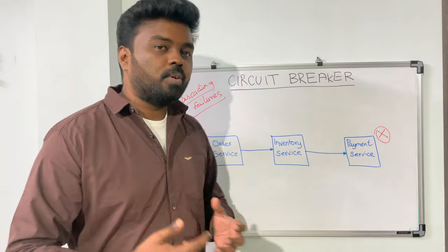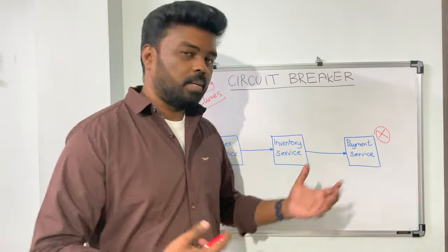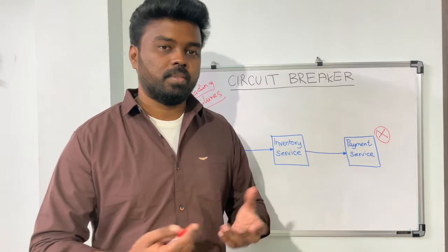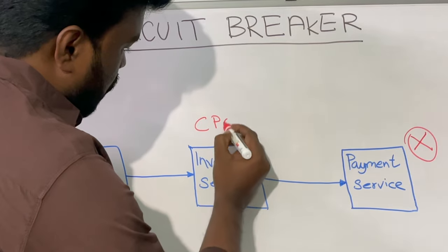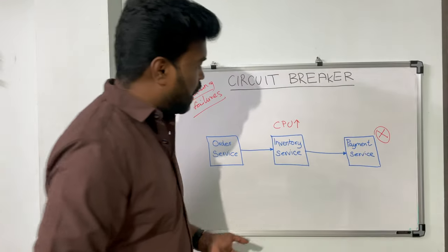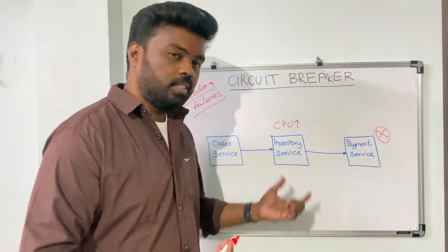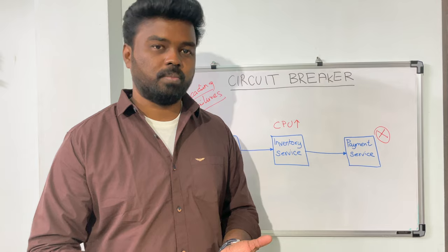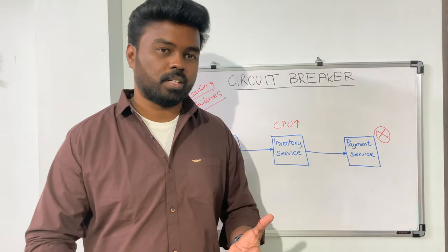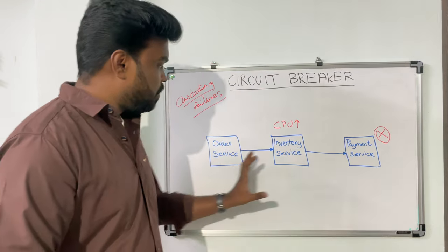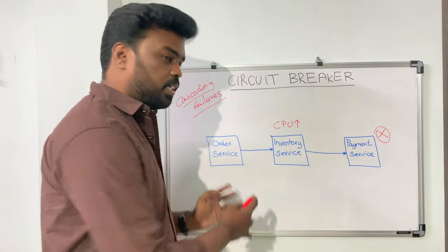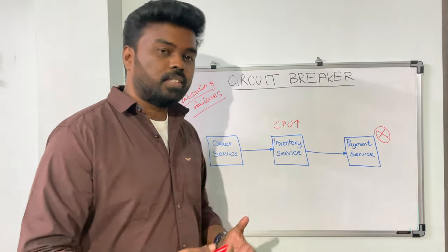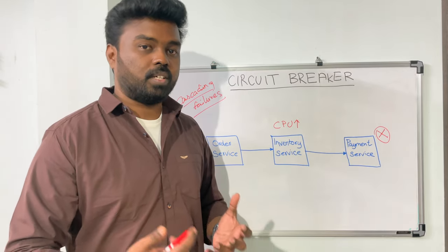The inventory service will start to wait for all those responses and begin to slow down. As it spends more time waiting for responses from the payment service, the resource consumption in the inventory service goes up — most of the CPU will be consumed. When CPU usage is high in the inventory service, it will start to perform poorly because there is not enough CPU to handle more requests. The order service then sends requests to the inventory service and faces the same issue, since the inventory service cannot handle requests as fast as it usually does.